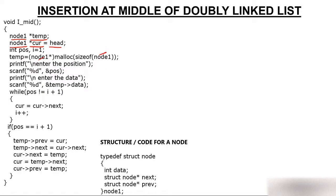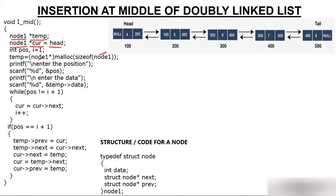So we have created two pointers: temp and current, where current is initialized with head. Since the linked list has 5 nodes and head holds address 100, current also holds 100 and points to the first node. We also create an integer variable position and an integer variable i initialized to 1.